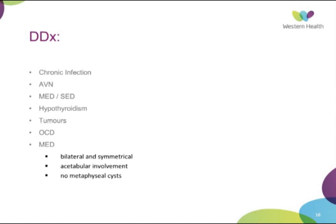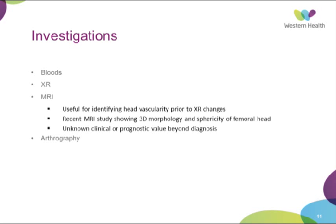Investigations: baseline bloods should be done to rule out other causes such as hypothyroidism or infection. X-rays are the standard for diagnosis and management. MRI has been useful in determining physeal vascularity prior to x-ray changes. Arthrography has been used to determine the sphericity of the head and congruence. MRI has limited prognostic evidence beyond early diagnosis, and all the major studies have used x-ray.